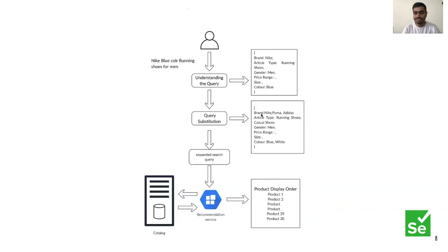Our search system does the same thing. First we understand the query, then we do substitution: the user searched for Nike, so they may also be interested in Puma or Adidas; they searched for running shoes, so casual shoes may also interest them; blue color, but maybe white too. We provide this expanded query to the search engine, which ensures the best results appear at the top so the user has good product visibility and a higher chance of purchasing.